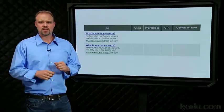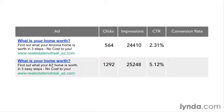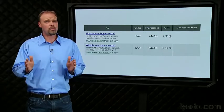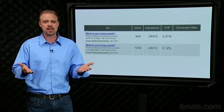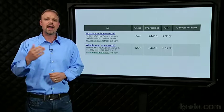After letting this campaign run for a few weeks, we've collected some data. On the first ad — the one that spells out the word Arizona — we've managed to get 564 clicks on 24,410 impressions, making for a click-through rate of 2.31%. On the second ad, we've gotten 1,292 clicks on just about the same number of impressions — a click-through rate of 5.12%, more than twice the first ad. If I analyze this data using a normal approximation to the binomial distribution, I get a p-value of less than .01, which basically means that statistically we can be more than 99% sure that this difference is not just chance. So ad 2 is clearly better, right?